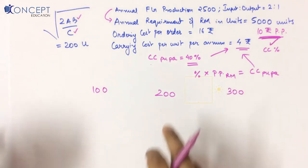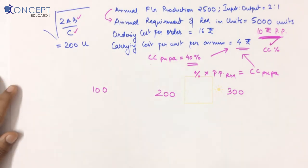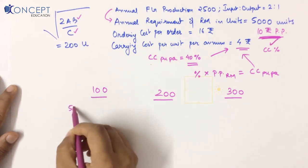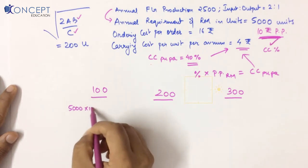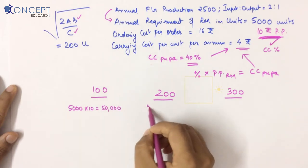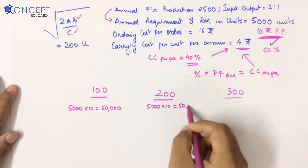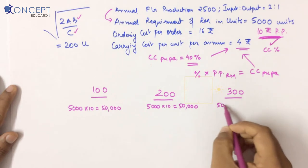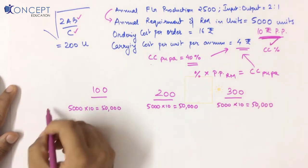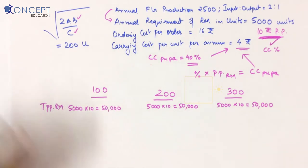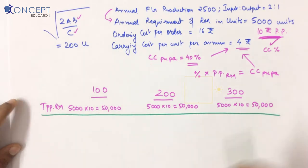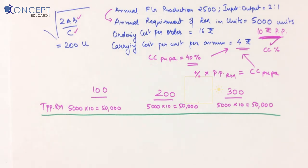Let us try and do it. Whether I order 200 units or 3300 units, my total purchase price of raw material is 5000 × 10 = 50,000 either way. Total purchase price of raw material is almost irrelevant in decision-making because the same price applies regardless of order quantity — no supplier discount is being offered here.